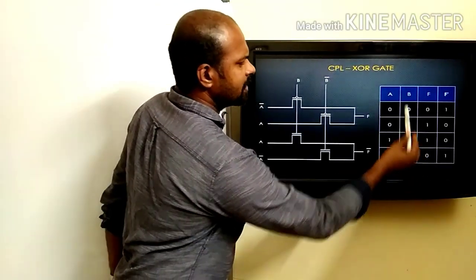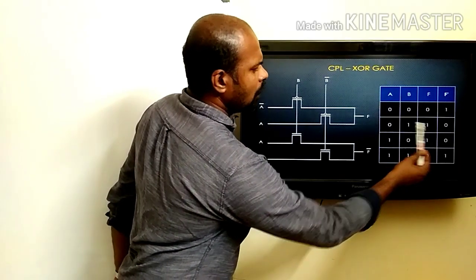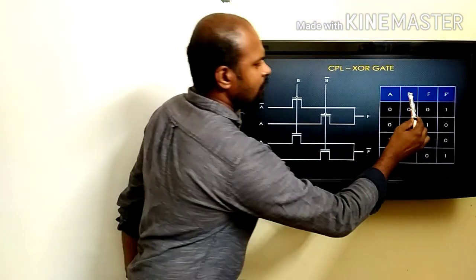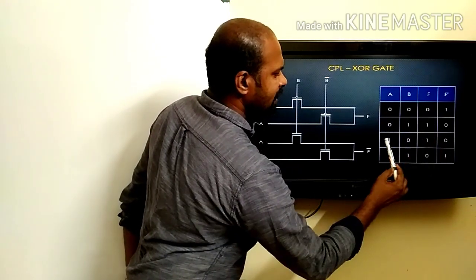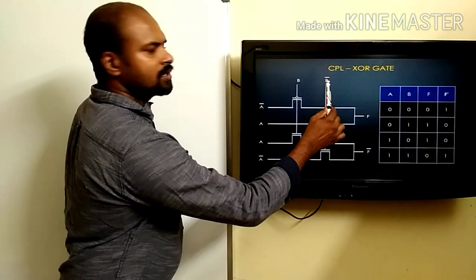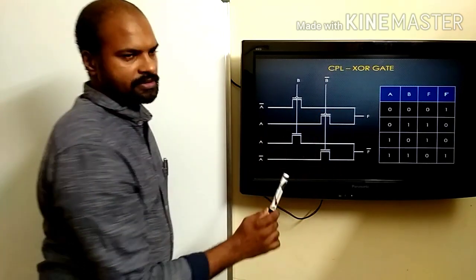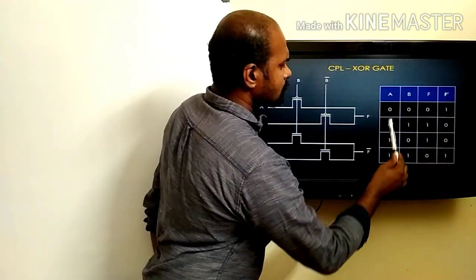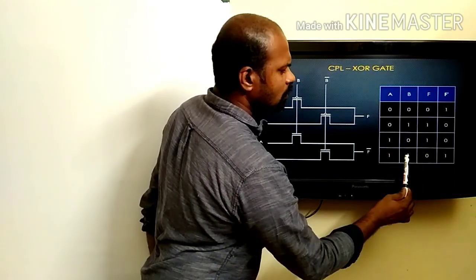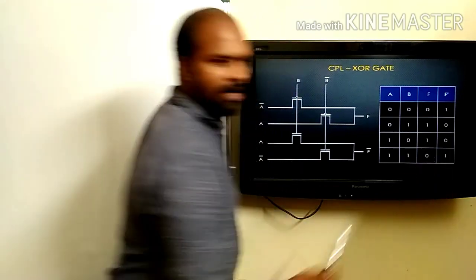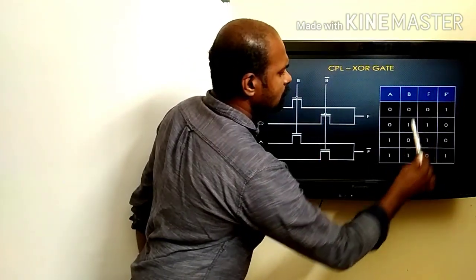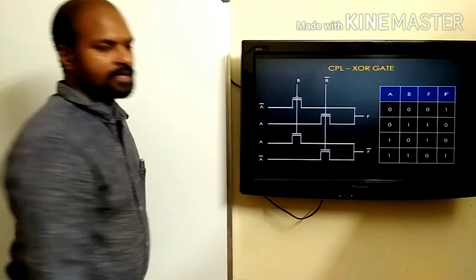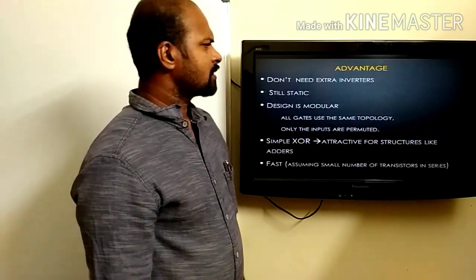Now take the case of the XOR gate. When B equals logic one, the output is the inverse of A, so A-bar is connected to this transistor. When B equals zero, B-bar becomes one and the output is exactly the same as A, so A is connected to this transistor — that's how we realize XOR. For the complement function F-bar: when B equals logic one, the output is the same as A, so A is connected; and when B equals zero, the output is the inverse of A, so A-bar is connected. That is how we realize these different gates.